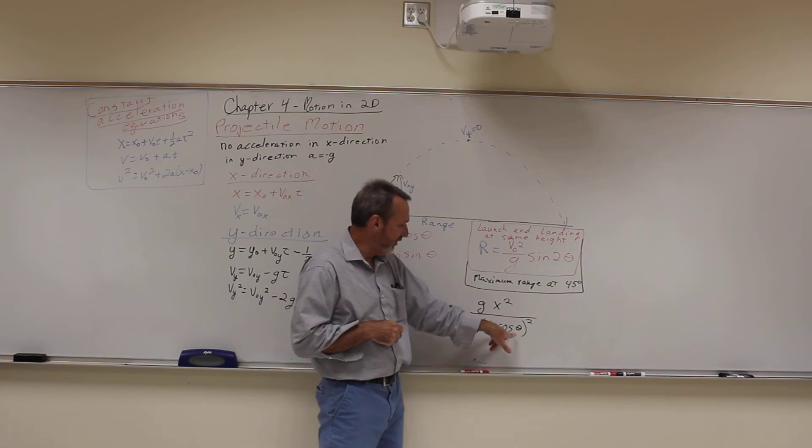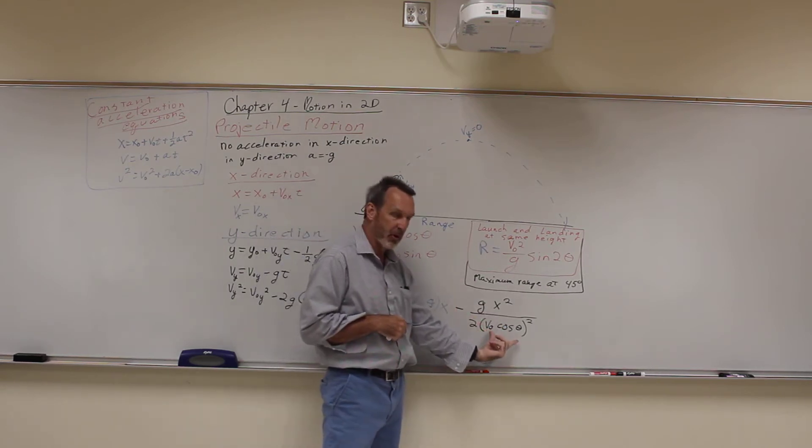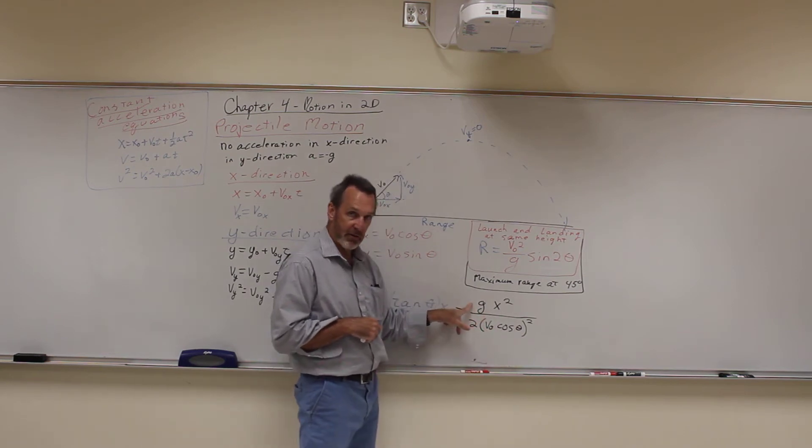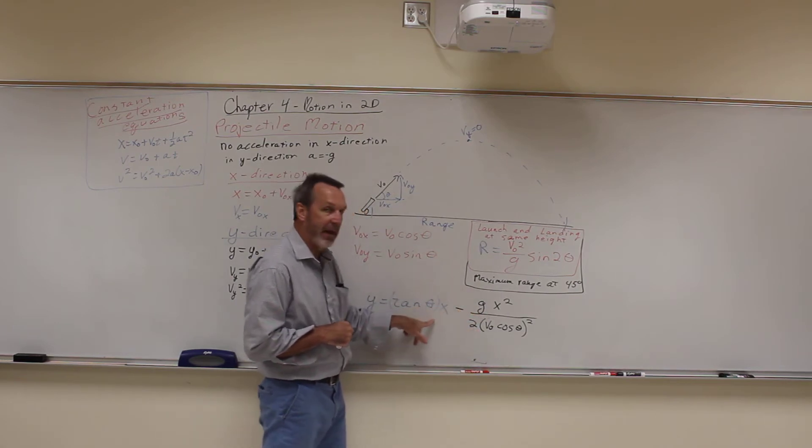V-naught cosine theta—this is our initial condition, what angle you're launching at with its initial velocity, so that's just how you start. G is a constant, right? And over here, tangent theta, that's a constant, so really this is a function of X squared and X.